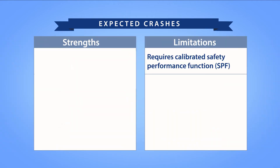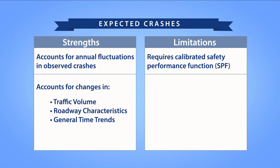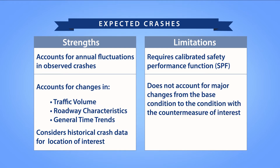The expected crash frequency combines the observed and predicted crash frequency using the EB method. This approach accounts for annual fluctuations in observed crashes as well as changes in traffic volume, roadway geometrics, and general time trends. The expected crash frequency approach assumes the combined information from observed and predicted crashes is representative of future safety performance. As such, it may not be reliable when the site characteristics change drastically from the past condition to the present or future condition of interest.